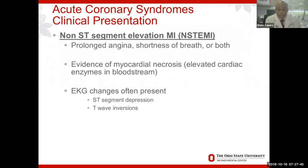The difference between a non-ST-segment elevation myocardial infarction and unstable angina is easy — it comes from the lab tests. You have evidence of myocardial necrosis. Here we use troponin; earlier in my fellowship we used CPK. These myocardial cells are little powerhouses with lots of enzymes, and we detect the enzymes to tell us that there has been death of myocardial cell tissue.